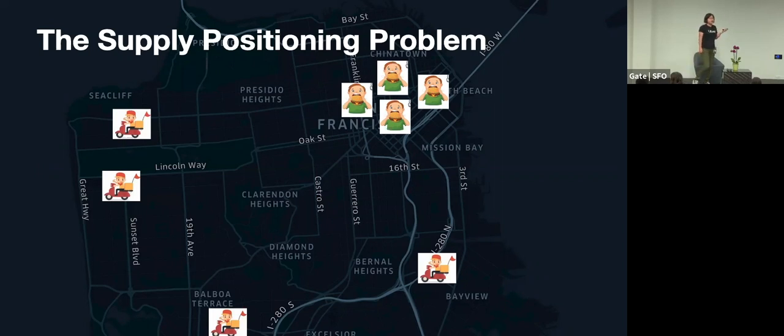So surge is a way to solve it. But in addition to surge, there are three ways that we can tell couriers that you should be going to this region maybe around 5 p.m. And then the first step we need to do is how do we define this region?